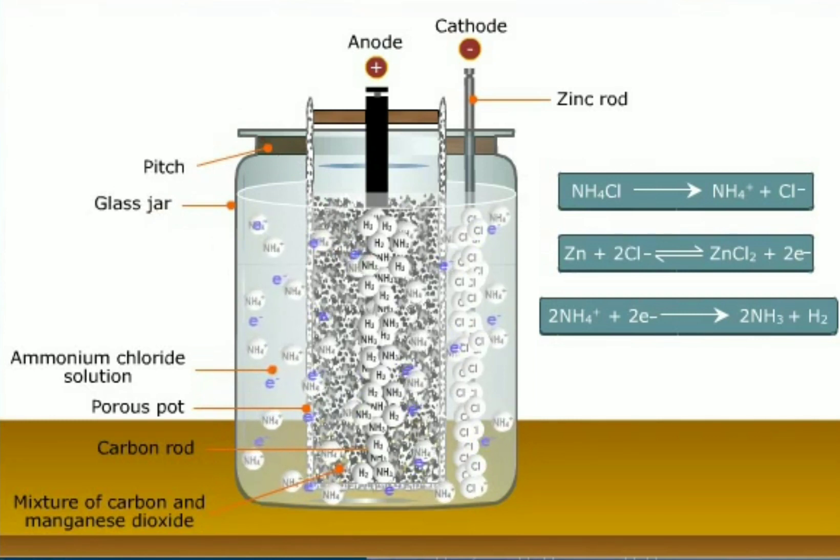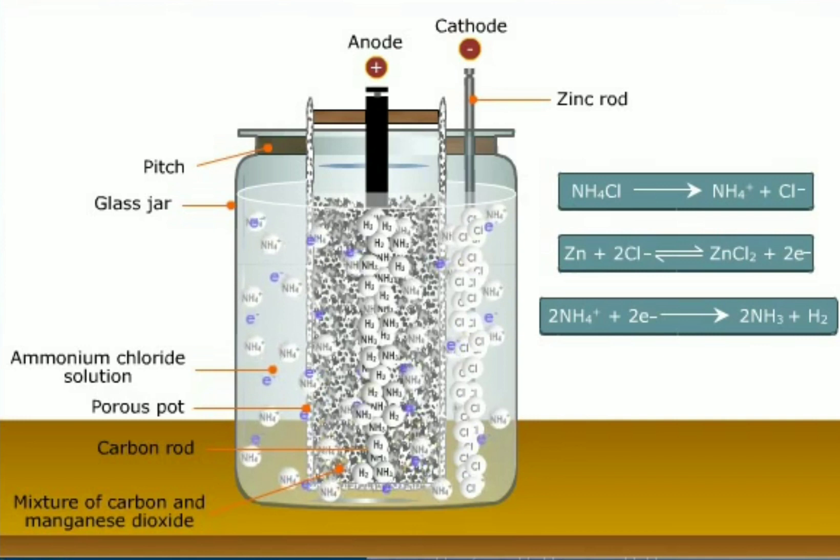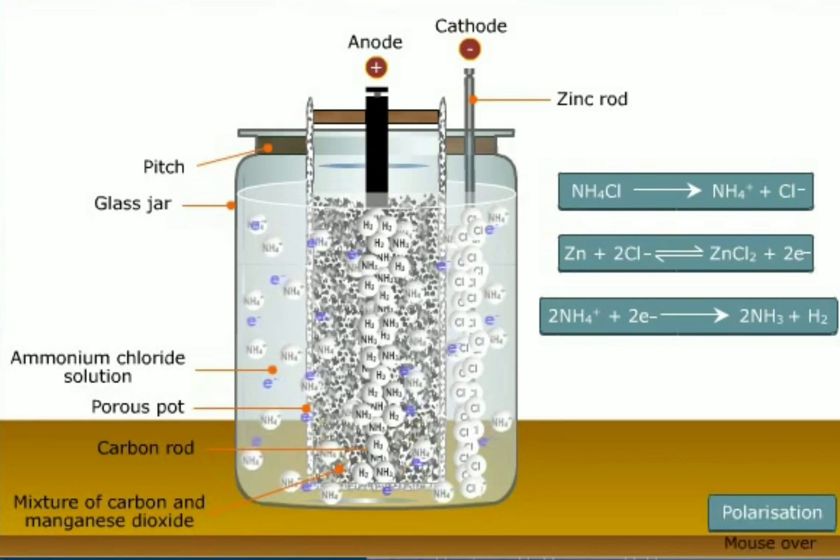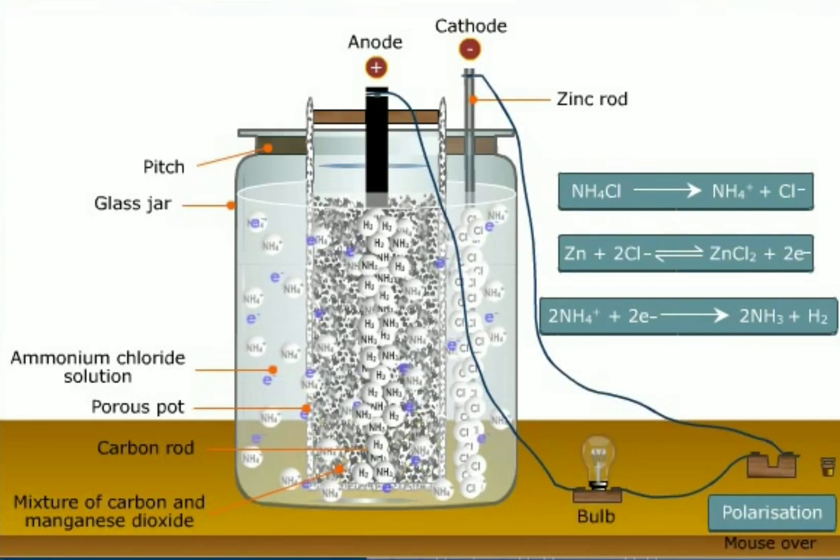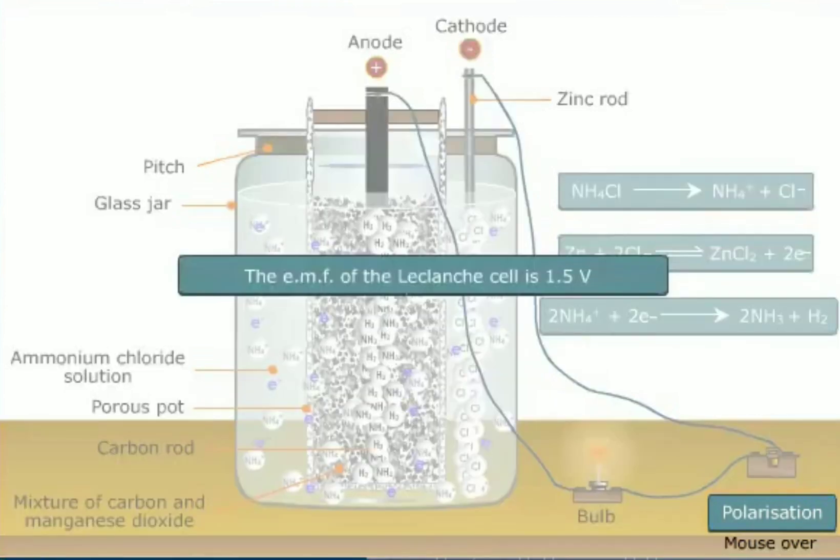The hydrogen gas is oxidized by manganese dioxide to form water and polarization is prevented. Now, if an external copper wire is connected to the electrodes, the electrons will move from the cathode to the anode generating electricity. The EMF of the Leclanche cell is 1.5V.